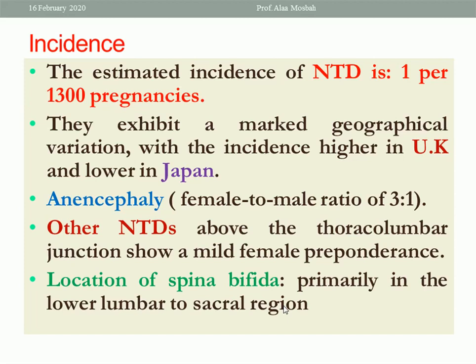For anencephaly, the female-to-male ratio is 3 to 1. Other neural tube defects above the sacrolumbar junction show a mild female preponderance. The location of spina bifida is primarily in the lower lumbar to sacral region, which is more common.